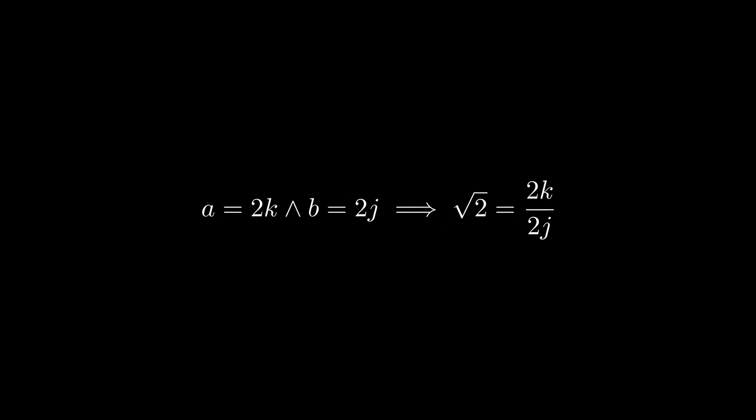So, we can rewrite both a and b in the original equation. This implies that the GCD is not in fact 1. However, in our assumption we assumed that it was fully reduced. It can't both have a GCD of 1 and not 1.